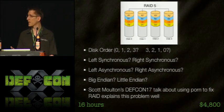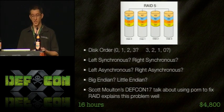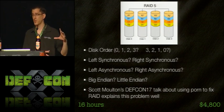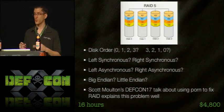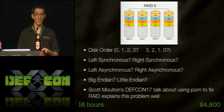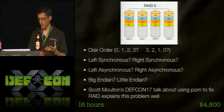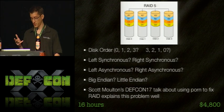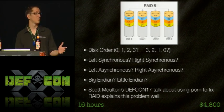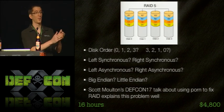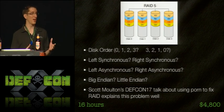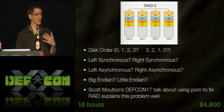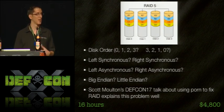The important RAID parameters include disk order, stripe ordering (left synchronous or right synchronous, left asynchronous or right asynchronous), whether blocks are stored in Big Endian or Little Endian format, and block size. If you saw the DEFCON 17 talk by Scott Moulton on using porn to fix RAID, it explains the problem beautifully — I recommend looking it up on YouTube. That presentation has helped investigators recombine RAID arrays.